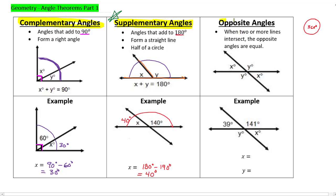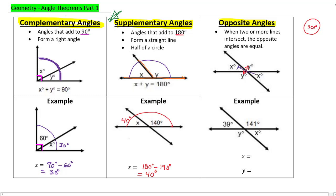The third rule is called opposite angles. Any time you have angles that are across from each other when two lines are intersecting, they will always be the same. I've labeled them both x and both y because they're the same. So if this angle is 141, the angle directly across from it also has to be 141. And if this one is 39, the one across from it also has to be 39.